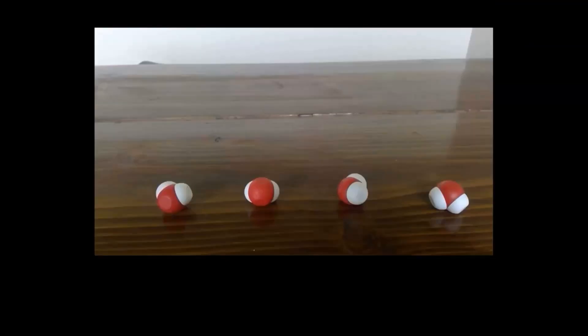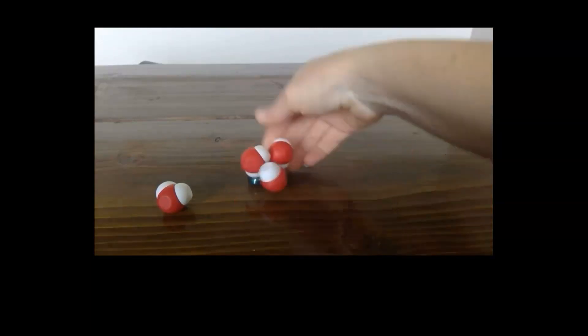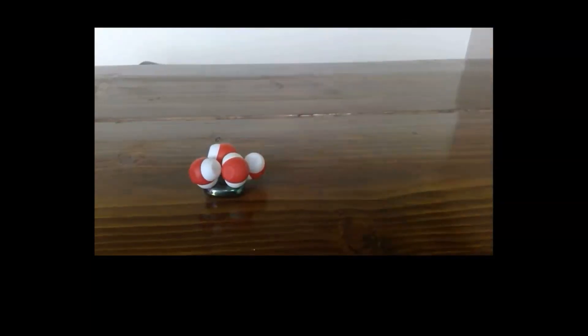You learned about colloid osmotic pressure in chapter 18. Remember how plasma proteins hold water in the blood? Here are the water molecules. Here is the plasma protein. If you have plasma protein, it attracts water. Colloid osmotic pressure is the plasma protein pulling water into the blood.